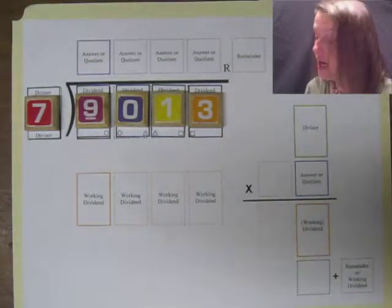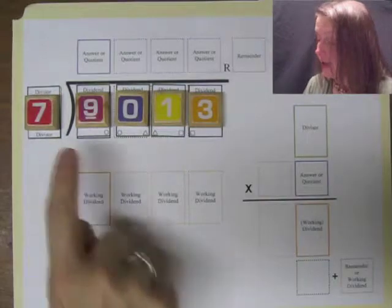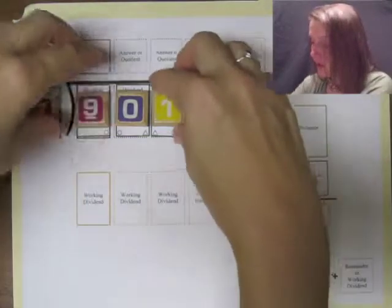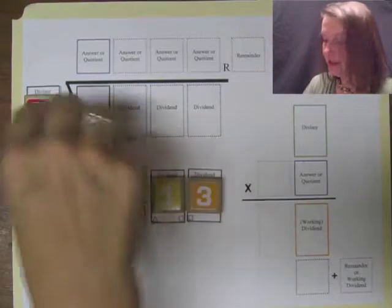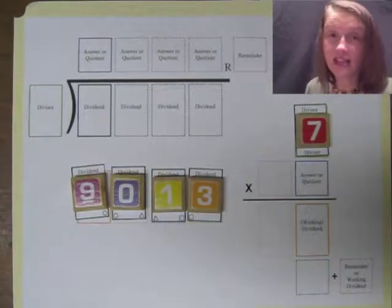So there's my division problem. 7 into 9,013. So here's how we play this. Everybody moves down to the working dividend from the dividend and divisor moves over here. That's how we start.